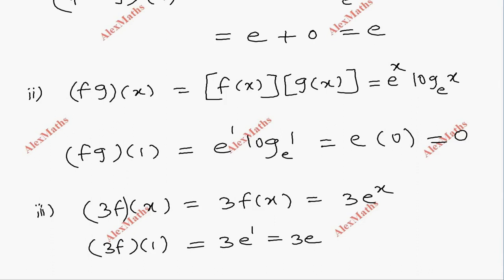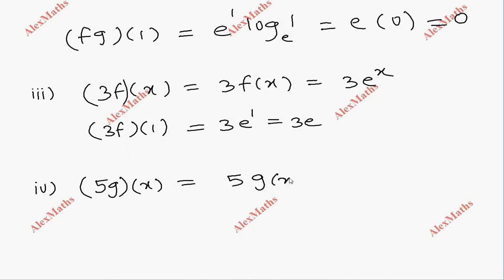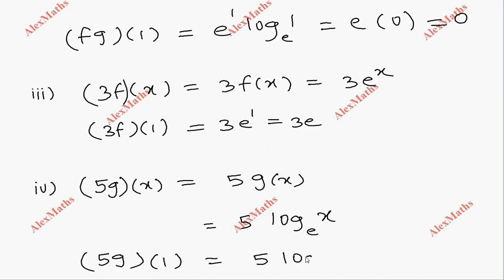The fourth operation is 5g of 1. So 5g of x is nothing but 5 into g of x, and g of x is log x base e. Substituting x equal to 1, we have 5 into log 1 base e. Log 1 is 0, so 5 into 0 gives the answer 0.